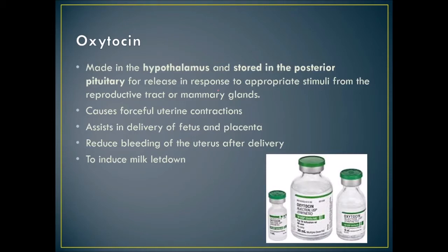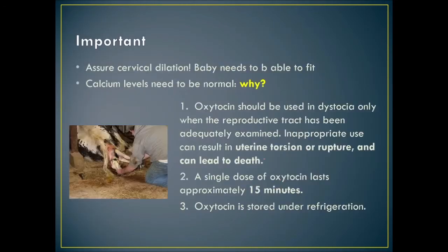Before using oxytocin, it's important to ensure the cervix is dilated — the baby must fit through the cervix — and calcium levels must be normal. Calcium is required for uterine contractions; without it, the uterus won't contract and the animal may become hypocalcemic and seize or collapse. Oxytocin should only be used after the reproductive tract has been adequately examined, or it can lead to uterine torsion, rupture, and death. A single dose lasts approximately 15 minutes; redose at 20 minutes. Store in the refrigerator.